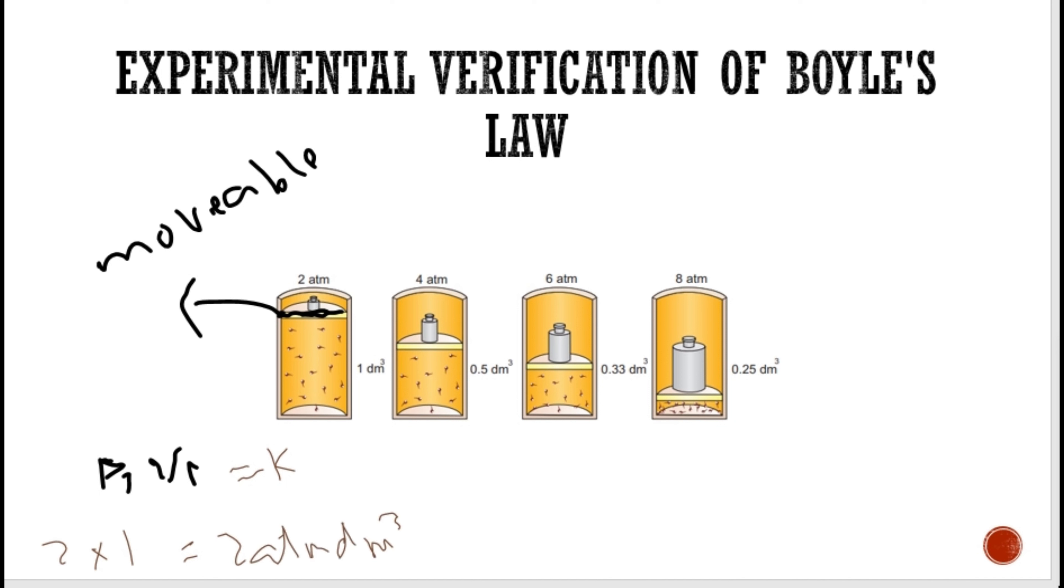If you increase the pressure 2 times to 4 atm, then volume becomes half, that is 0.5 decimeter cube. P2 V2 equals 2 multiply by 0.5 equals 2 atm decimeter cube.